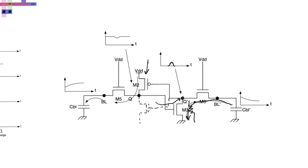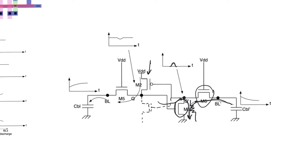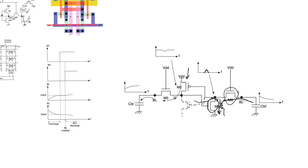You can guarantee this is not going to happen by making sure that the resistance of M3 is relatively small — specifically small relative to the resistance of M6 — so that the voltage divider formed between the two does not create a value of VQ bar high enough to even start turning M1 on. If you can guarantee VQ bar won't rise above the logic threshold of the static inverter, flipping won't happen. But this forces you to size the transistors in the cell to guarantee something other than density, which is not a situation we want.